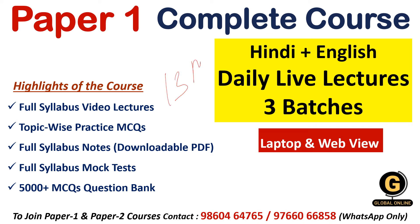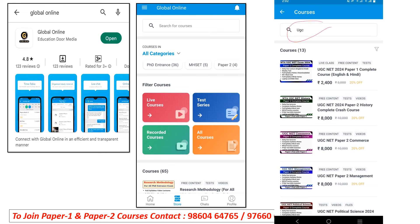For Paper One, a complete course new batch is starting from 13th May. In this batch you will get daily live lectures in English, recorded lectures, notes, and test series. We also have a complete course in Hindi — we are the only channel in India that provides completely separate Hindi and English lectures. If you join the English batch, you also get access to Hindi, and vice versa. The course is valid for 12 months, covering both December and June exams. Download the Global Online app, search 'UGC' in the store section — the course is available for 2,400 rupees for 12 months.